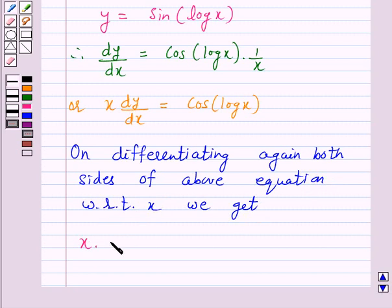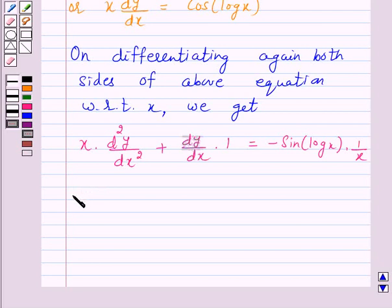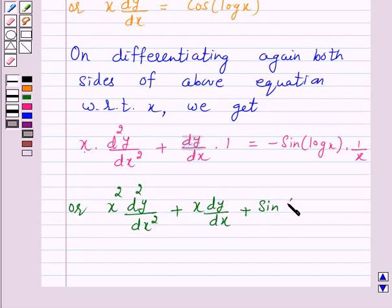x into d2y over dx square plus dy by dx into 1 is equal to minus sin of log x into 1 over x, or x square into d2y over dx square plus x dy by dx plus sin of log x is equal to 0.